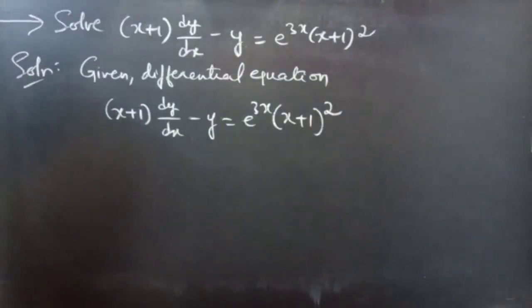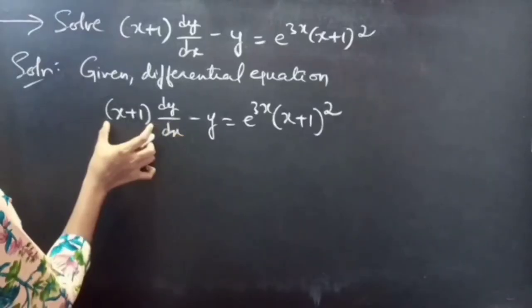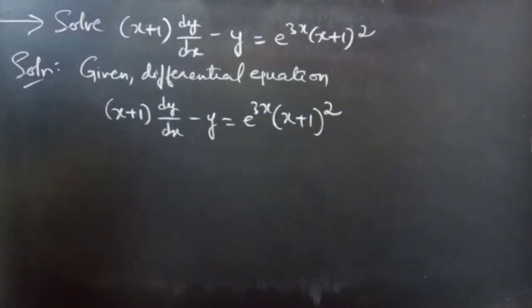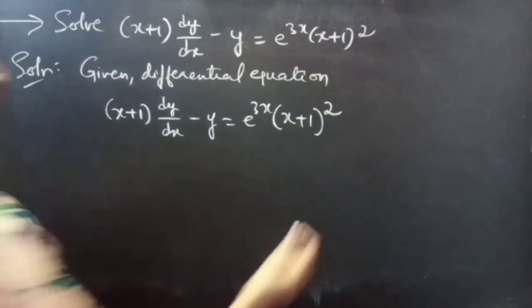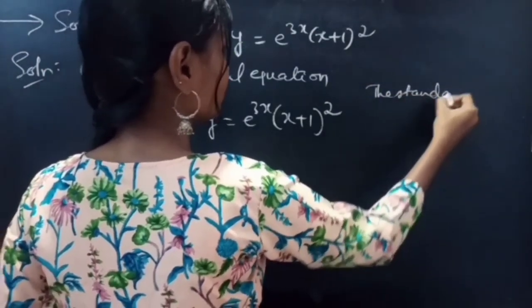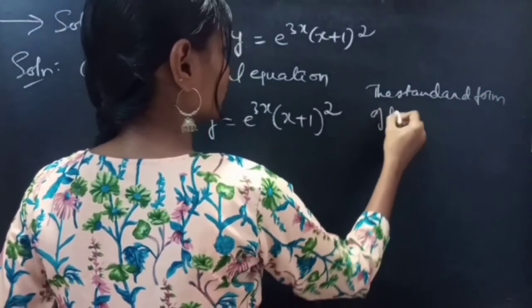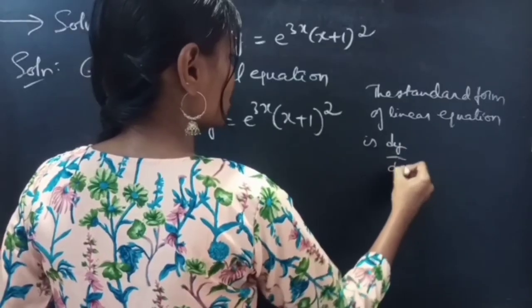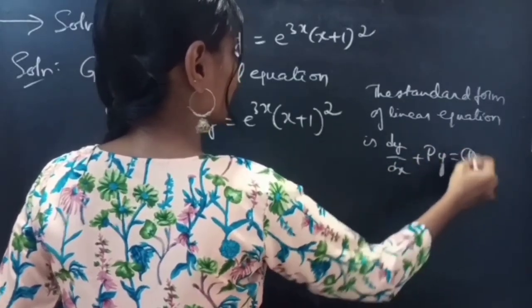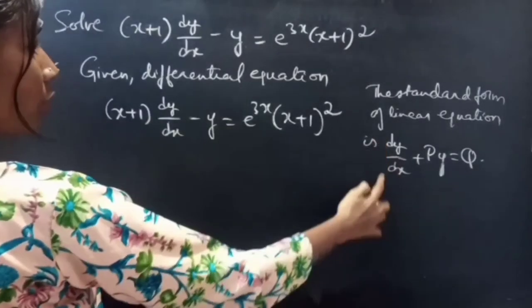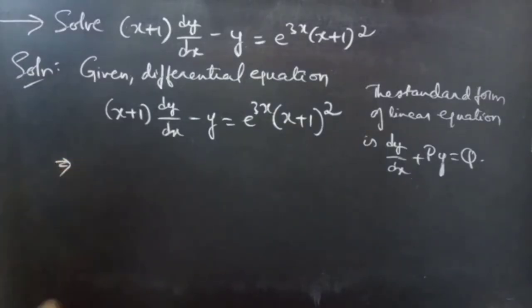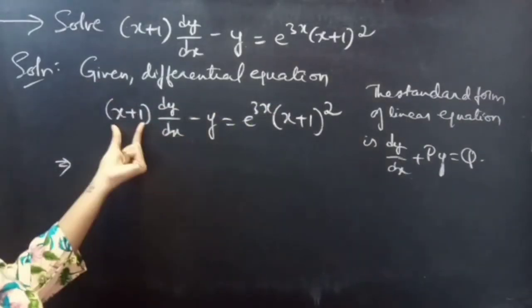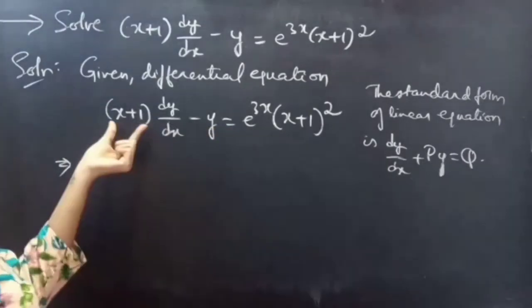Solution. Given differential equation — here (x + 1) dy/dx minus y equals e^(3x) times (x + 1) whole square. You need to make the given equation to the standard form of linear equation. We know that the standard form of linear equation is dy/dx plus P times y equals Q. In order to make the coefficient of dy/dx equal to 1, we will divide the whole equation — both LHS and RHS — by (x + 1).